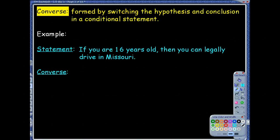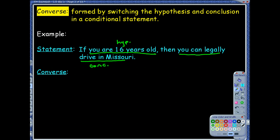A converse is what's formed when you switch the hypothesis and the conclusion in a conditional statement. What was your if becomes your then, and what was your then becomes your if. I've got a statement here. It says if you are 16 years old, then you can legally drive in Missouri. What is the hypothesis of this statement? It would be you are 16 years old. The conclusion would be you can legally drive in Missouri.